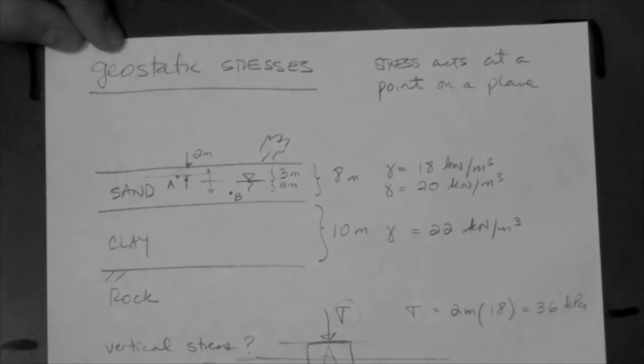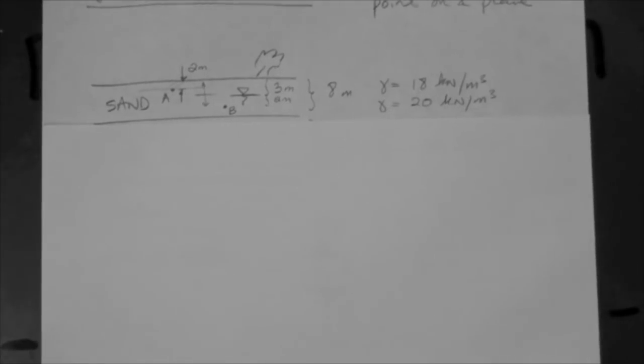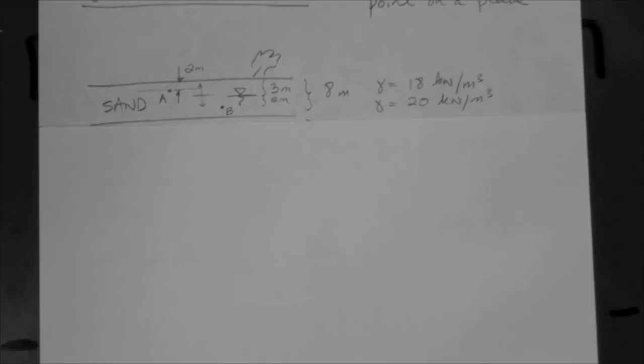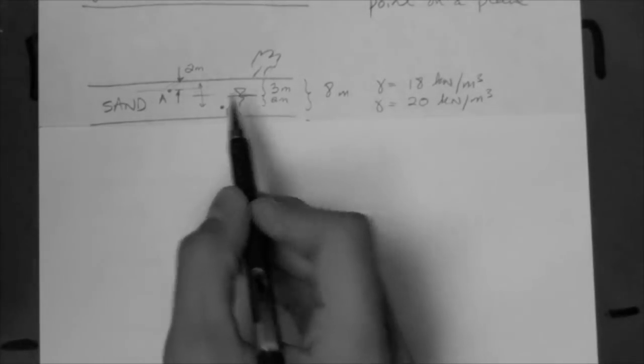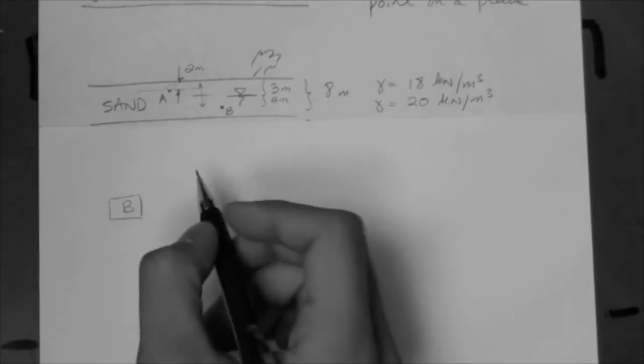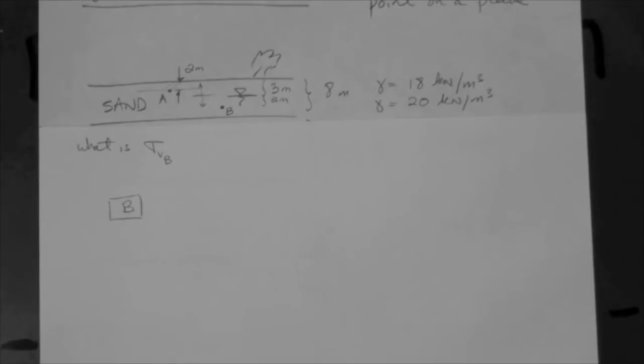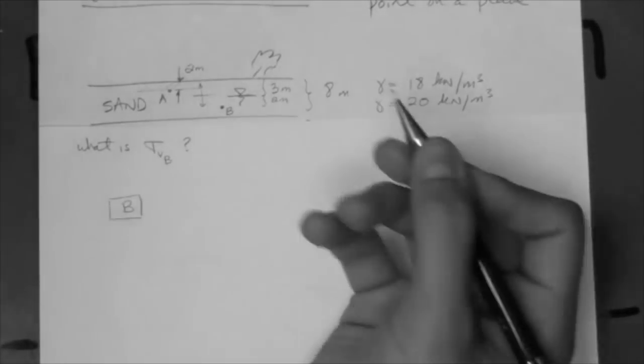I'm going to take another piece of paper and put it right here. Now we have point B, and the question is: what is the vertical stress at that point? Vertical stress — we could put a little B for vertical at point B. That would be the best way to denote that stress. The vertical stress acts on the horizontal plane.